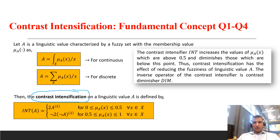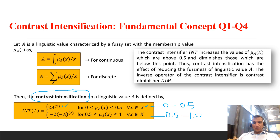According to the membership value, we have to apply two particular formulas. When the membership value lies between 0 and 0.5 (0.5 not included), we apply the first formula. When the value lies between more than 0.5 and up to 1, we apply the second formula.